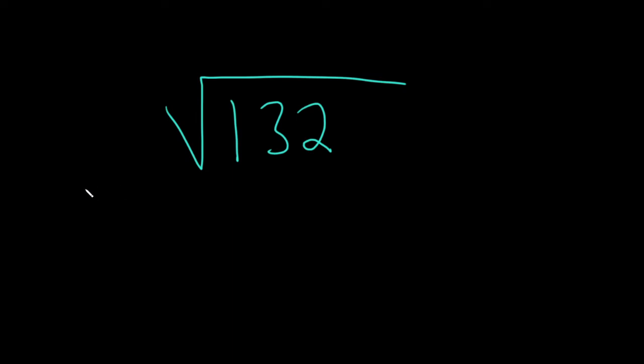Simplify the square root of 132. So to do this problem, we have to think about what is the largest factor of 132 that is a perfect square. That means when we take the square root of that number, we are going to get a whole number.